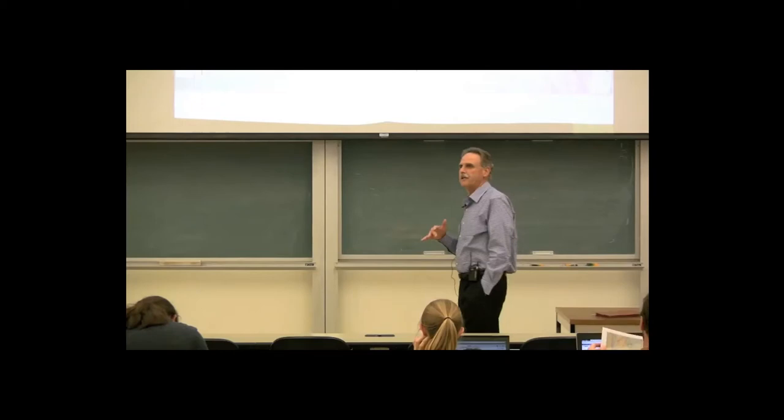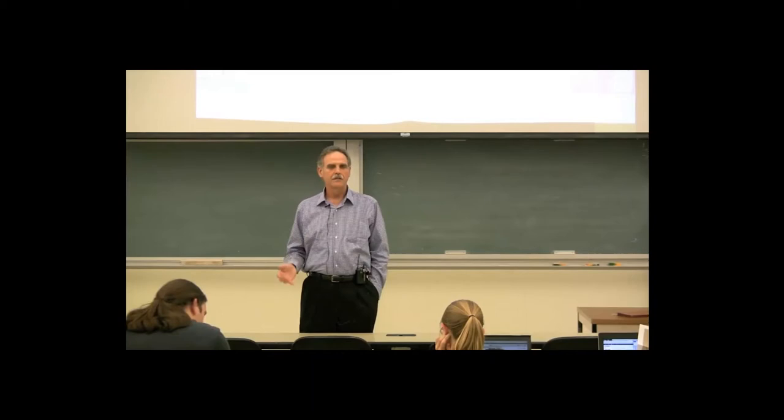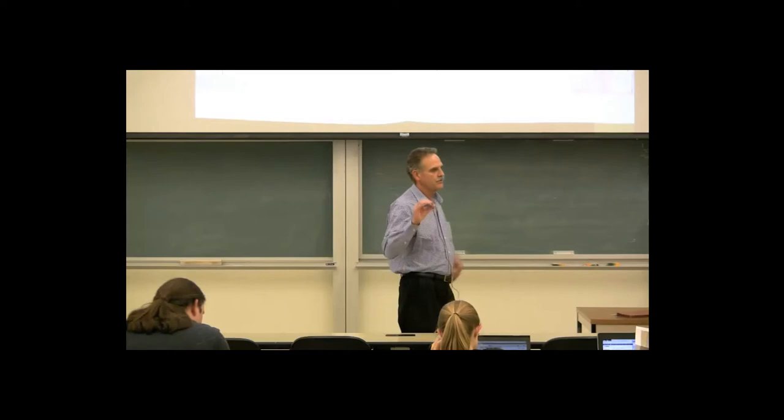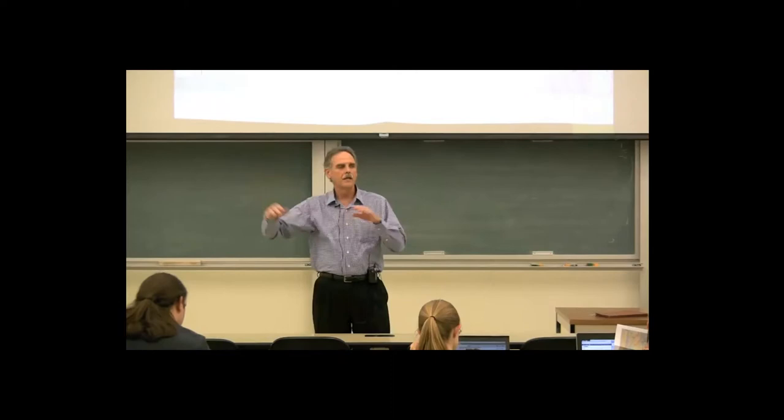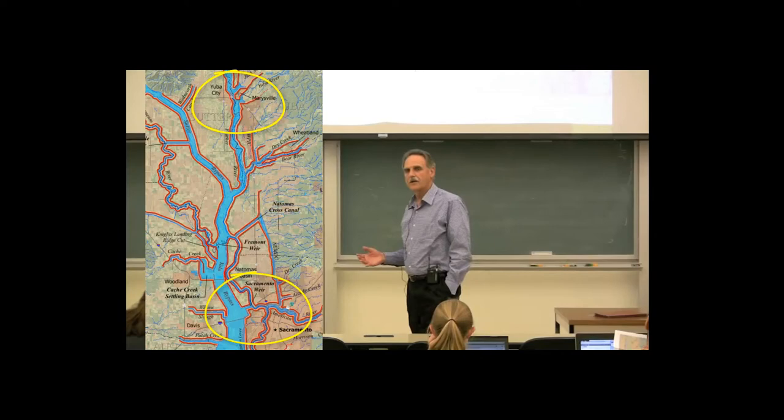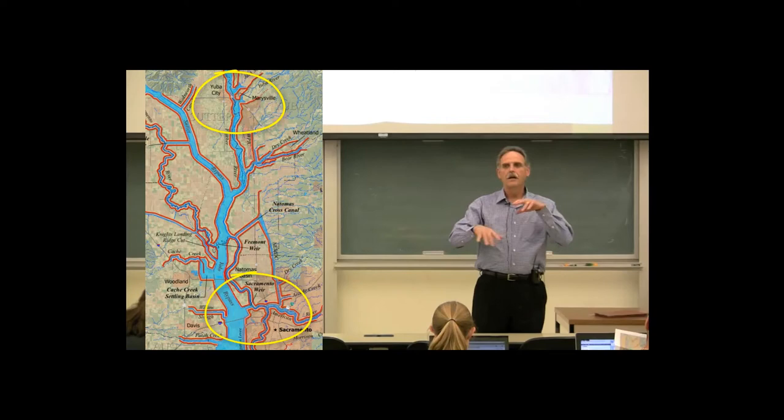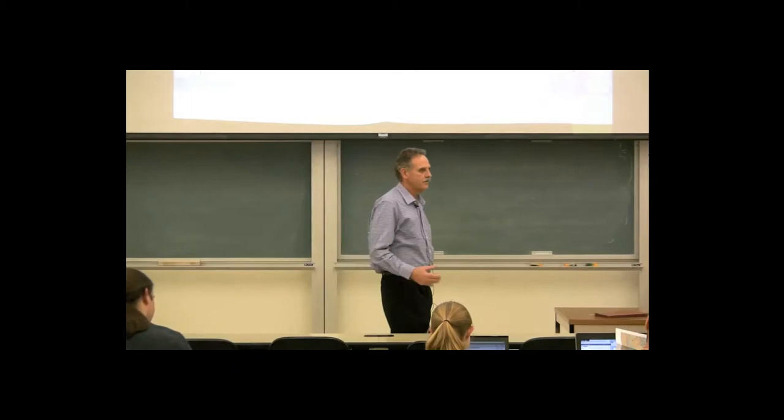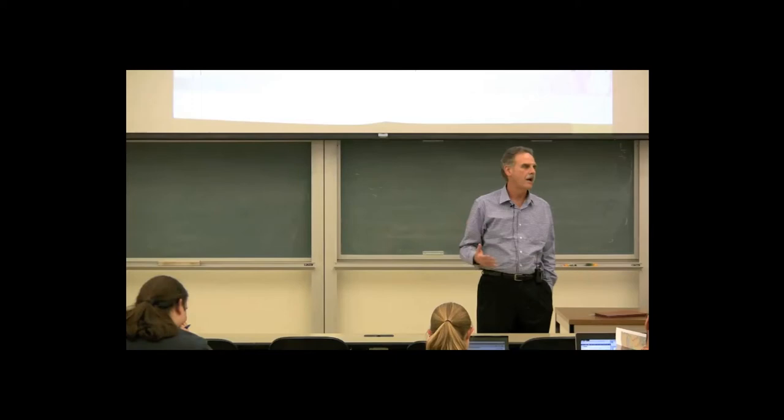The map has the shaded areas of where urban development exists today. The four historic settlements that came during the gold rush period were Yuba City on the west side of the Feather River, Marysville at the confluence of the Feather and the Yuba, Sacramento on the east side of the river, and west Sacramento on the west side of the river.